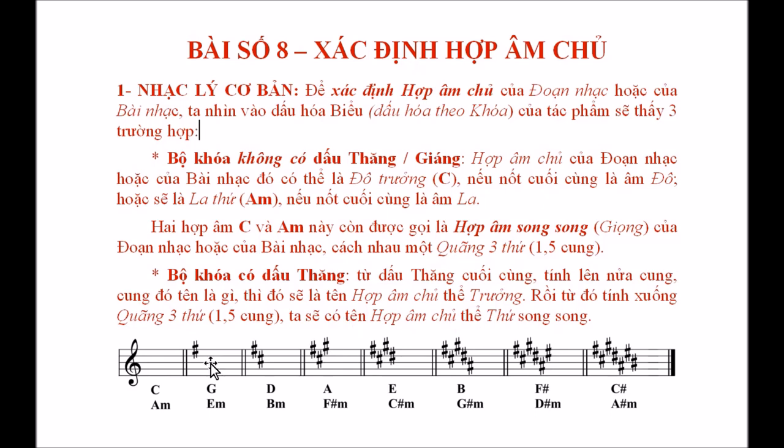Ví dụ, những tác phẩm có một dấu thăng, thì từ pha tính lên nửa cung sẽ là son. Vậy nếu tác phẩm kết thúc ở nốt son, sẽ là giọng son trưởng. Nếu kết thúc ở mi, sẽ là mi thứ.